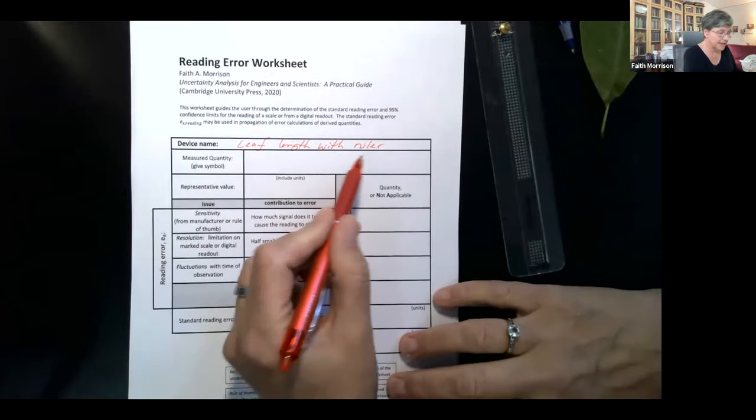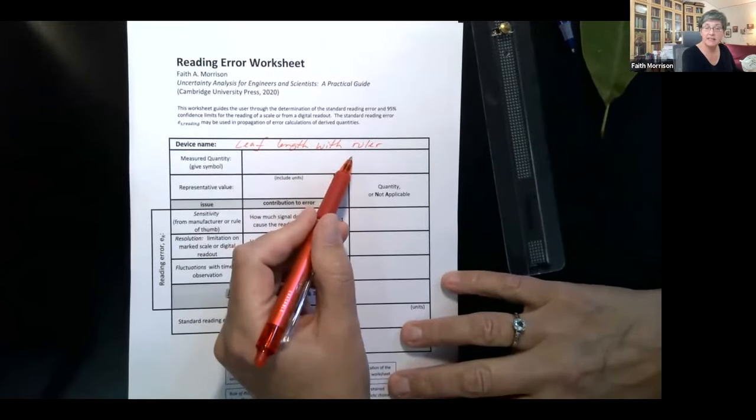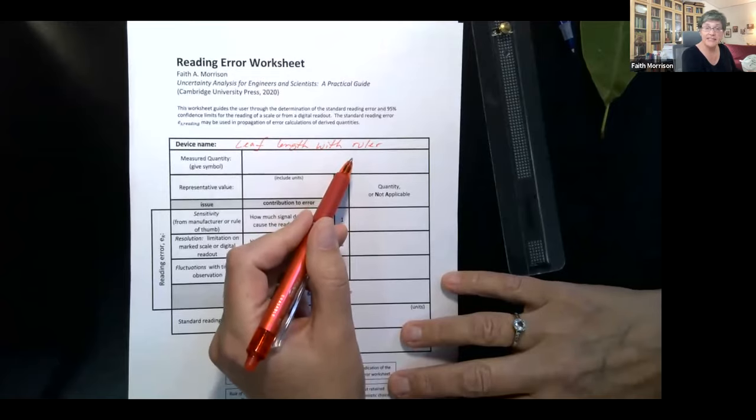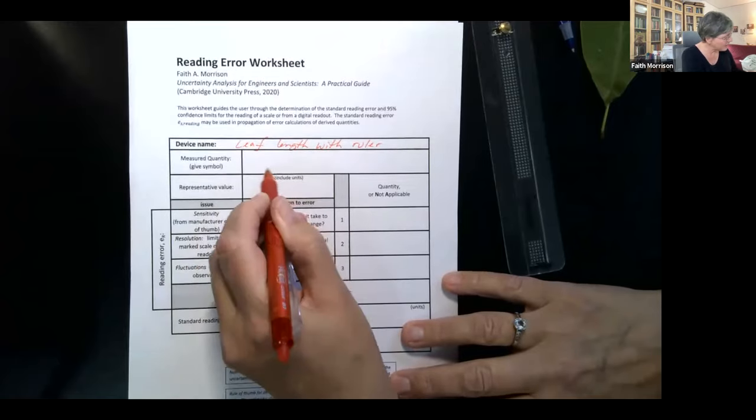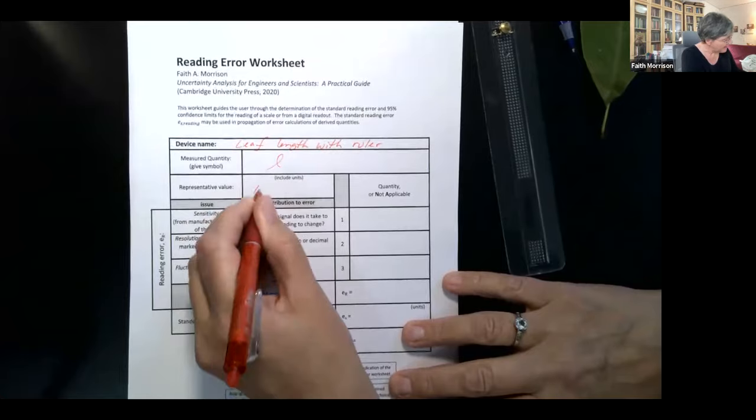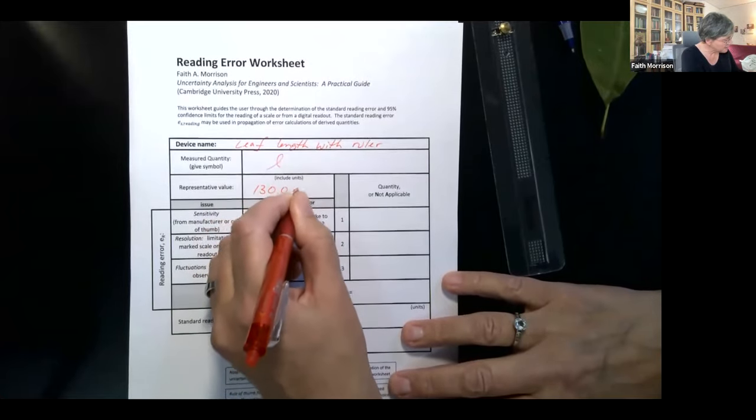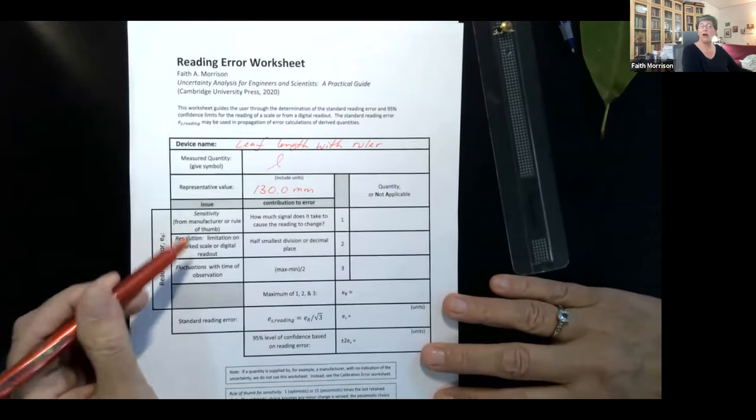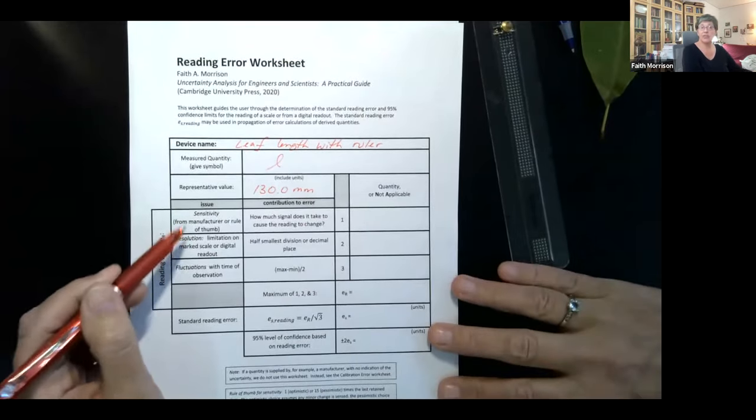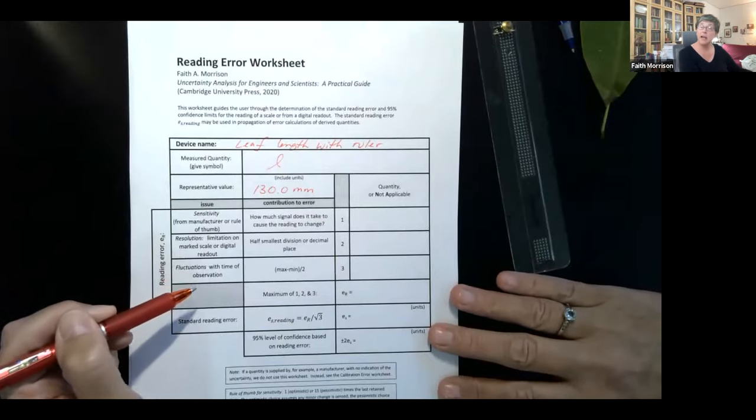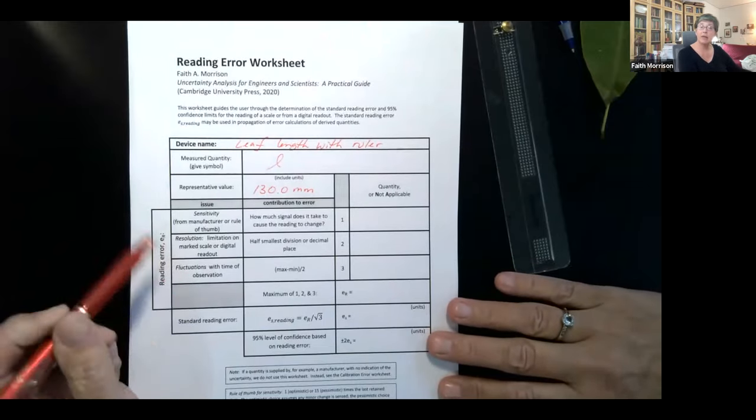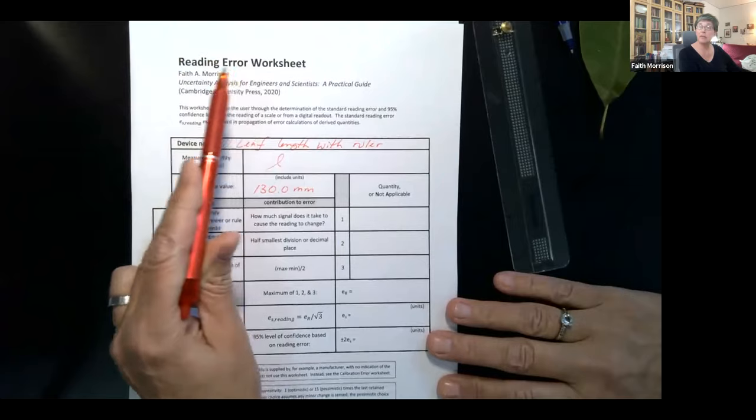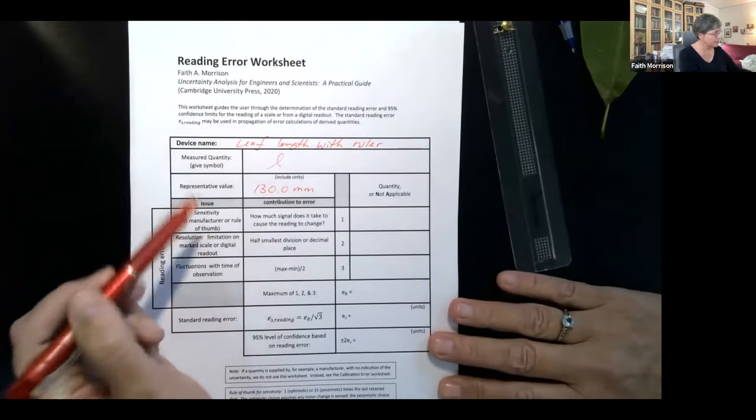So in the case of the reading error, because I think of these devices as ones I'm going to save, I have the name here. I'm going to name the leaf length. And I found that it was 130.0 millimeters long. And then for reading error, there are coincidentally three types of questions one can ask to see what kind of errors result from the ability to read from the device.